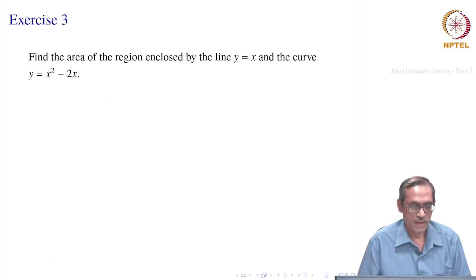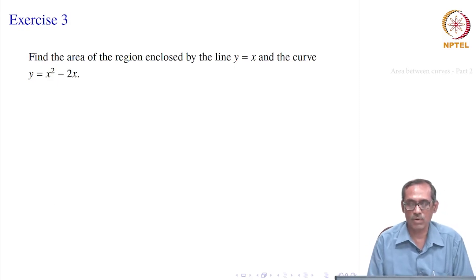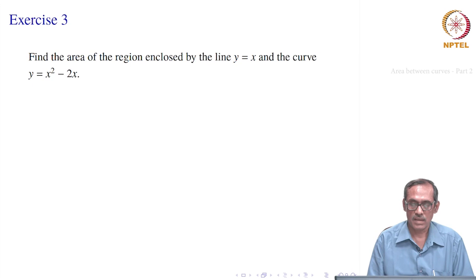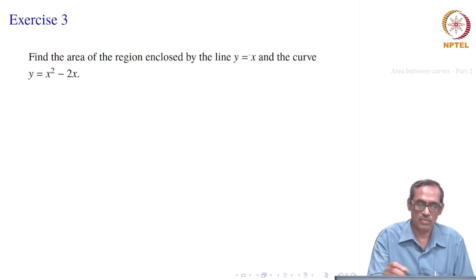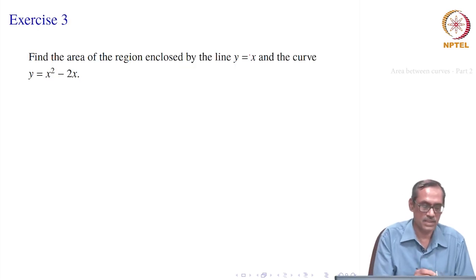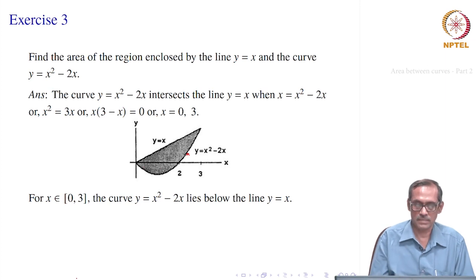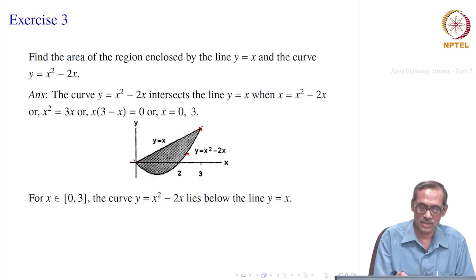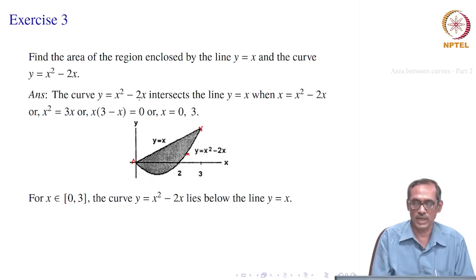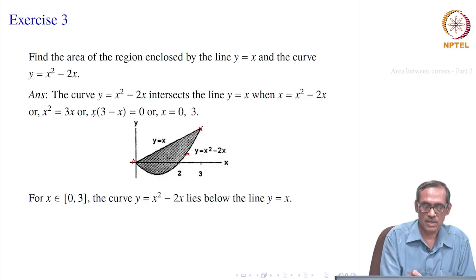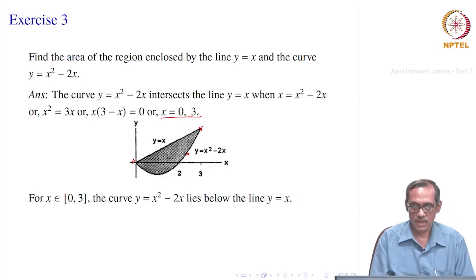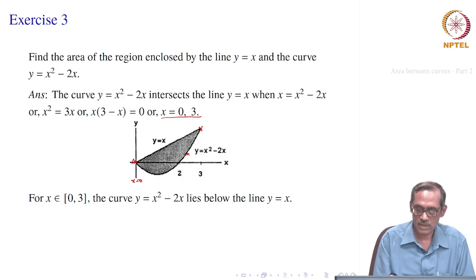Let us take the next problem. Find the area of the region enclosed by the line y = x and the curve y = x² - 2x. Since it is enclosed by these two, y = x should intersect the parabola at least at two points, forming a region. Setting x² - 2x = x gives x² - 3x = 0, so x = 0 or x = 3. These are the two intersection points.